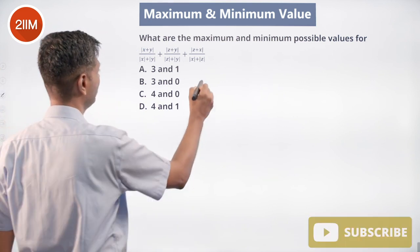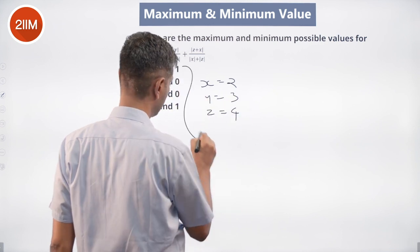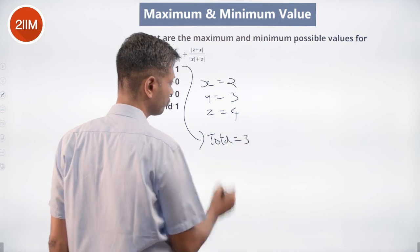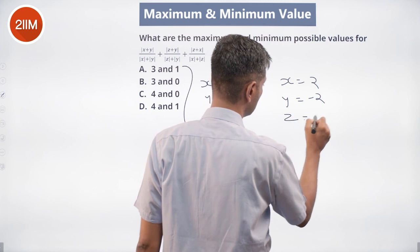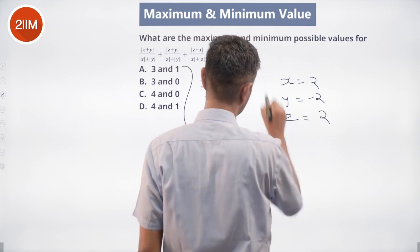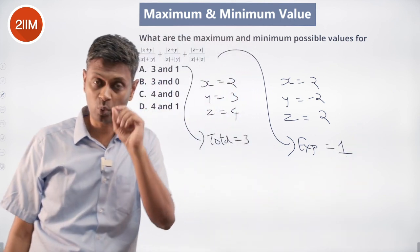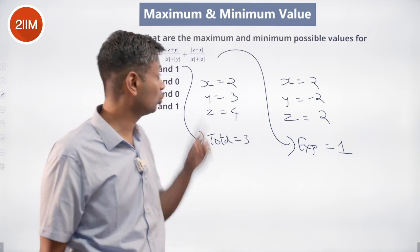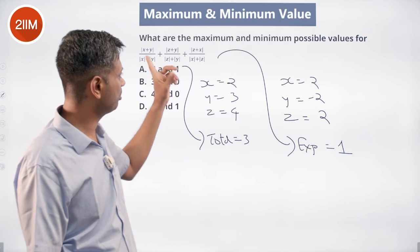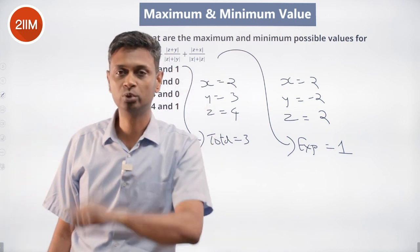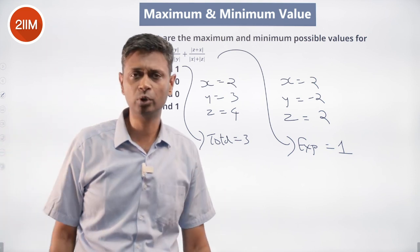Therefore, of these three terms, at least one of them must equal 1. The minimum is 1, not 0. Maximum is 3. I can verify: put x=2, y=3, z=4, the total is 3. Put x=2, y=minus 2, z=2, the total equals 1. So the expression goes from 1 to 3. Below 1 is not possible because at least one term must be 1; above 3 is not possible because each term is at most 1. Absolutely delightful question.